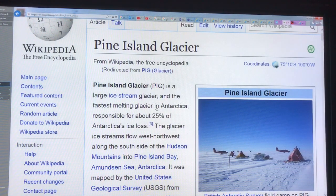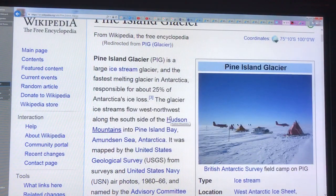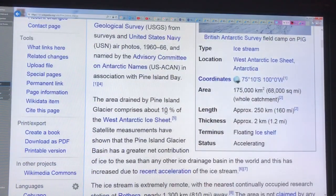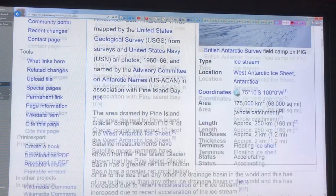Pine Island Glacier, I've talked about in the past—it's the fastest melting glacier in Antarctica, about 25% of Antarctic ice losses from there. It's on the West Antarctic Ice Shelf, so it's also rapidly melting, causing rapid sea level rise.